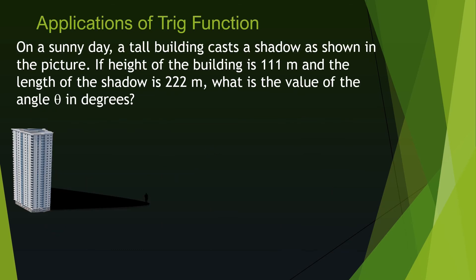Now let's do two more problems. This is an application of trig functions where you compute the height of a tall building by measuring the length of the shadow it casts on the ground and the angle the sun makes with the top of the building when viewed from the end of the shadow. We can model this as a right triangle because the shadow is horizontal and the building is vertical — they form a perfect 90 degree angle. Connecting the tip of the building with the tip of the shadow completes the right triangle.